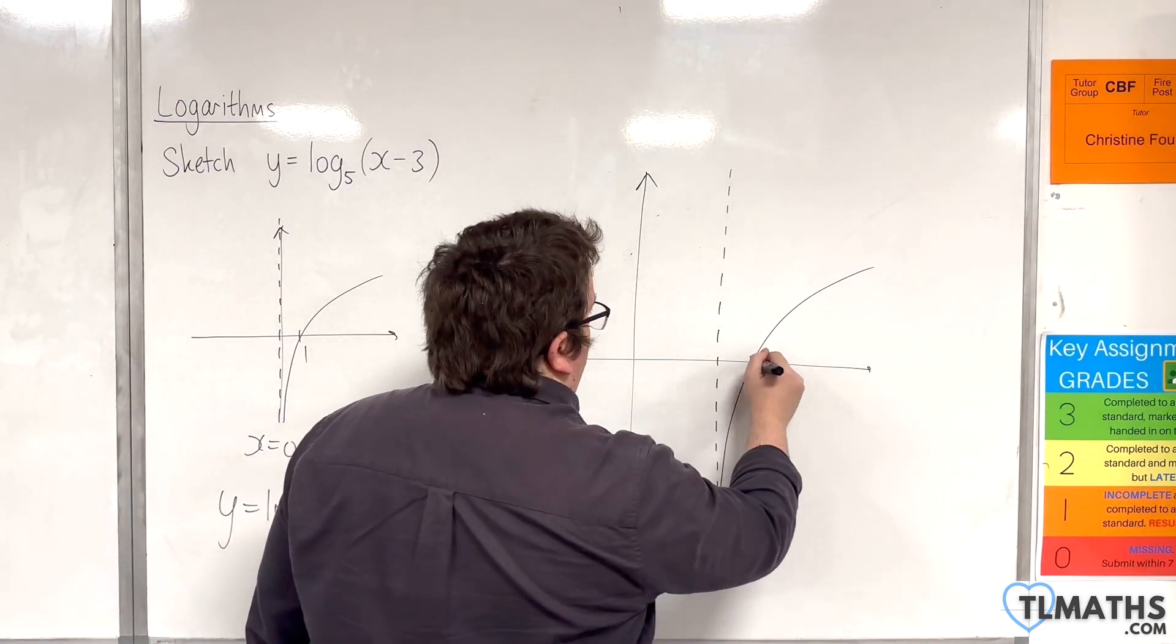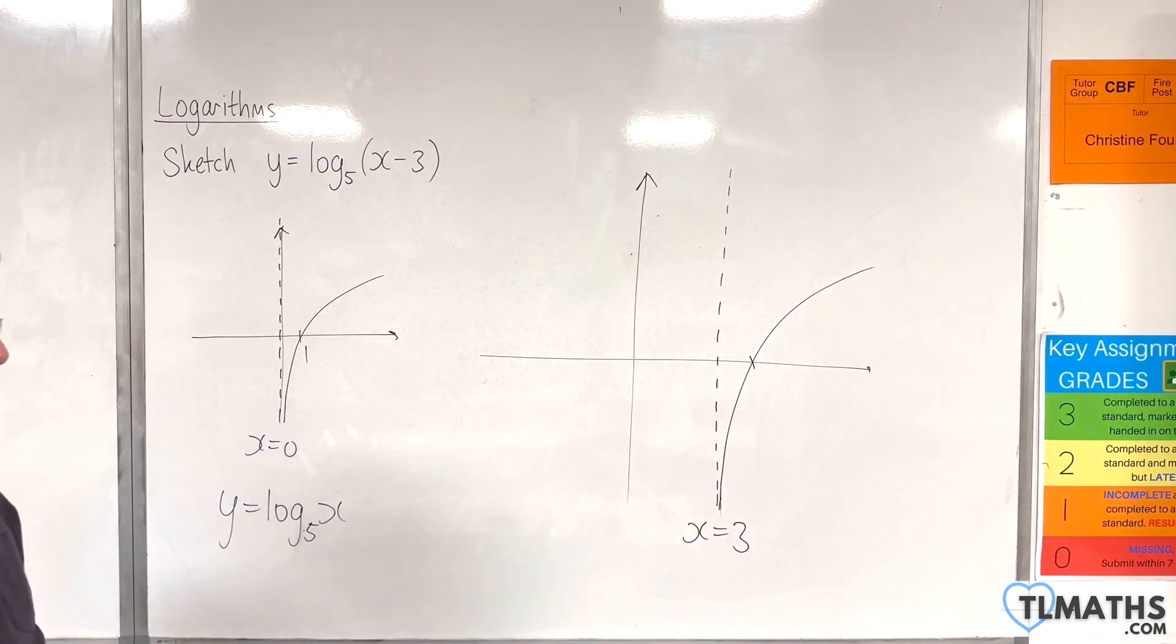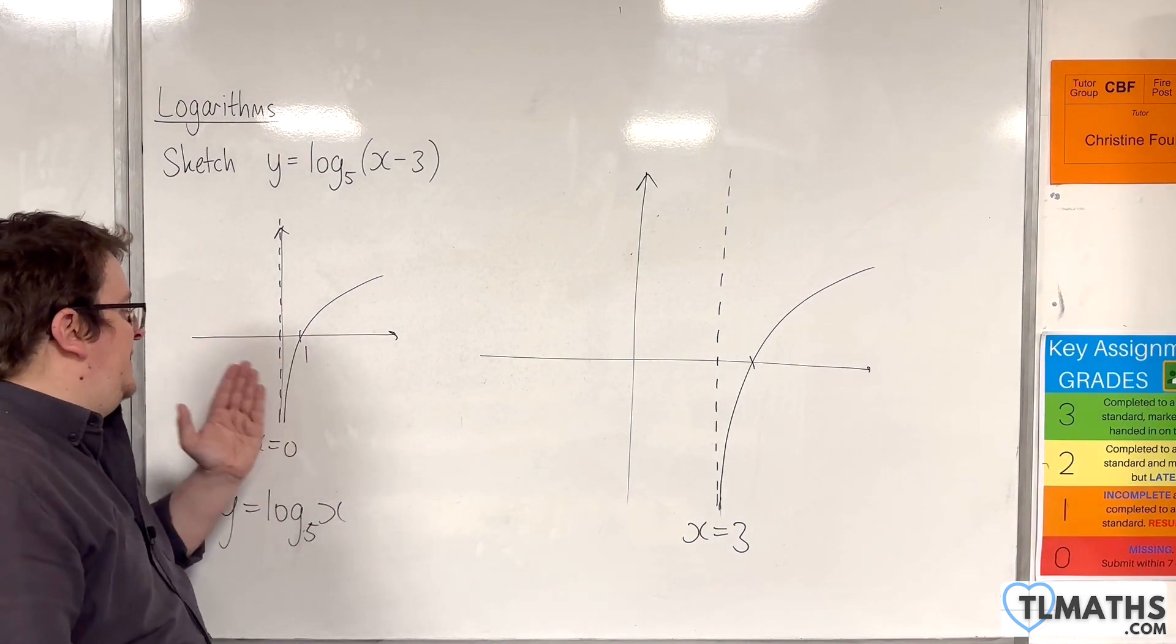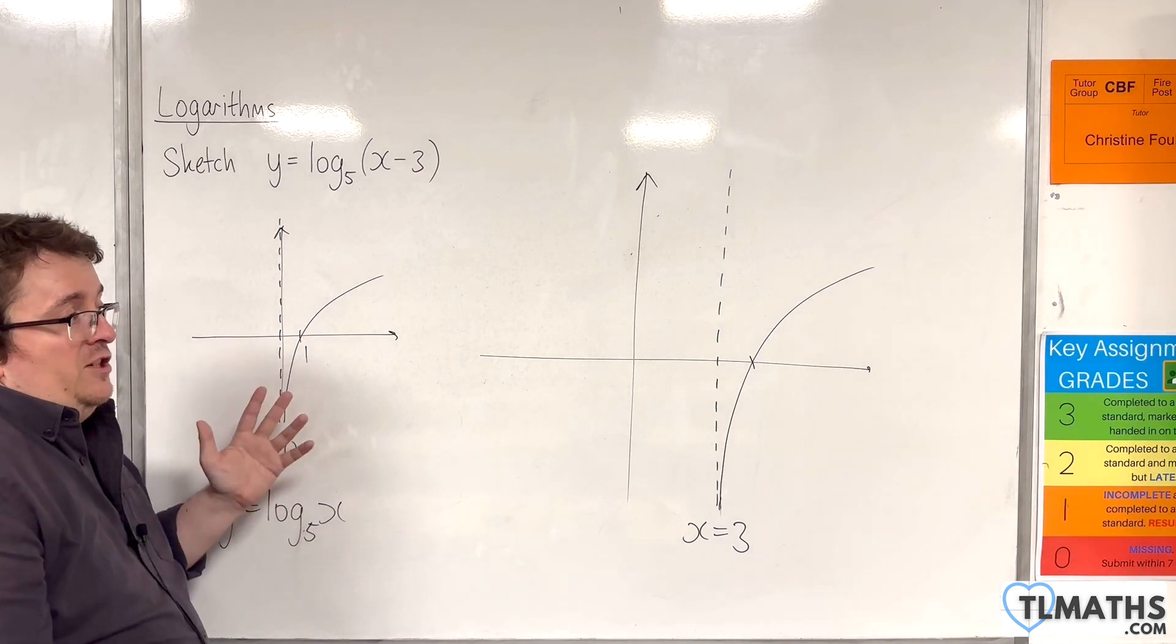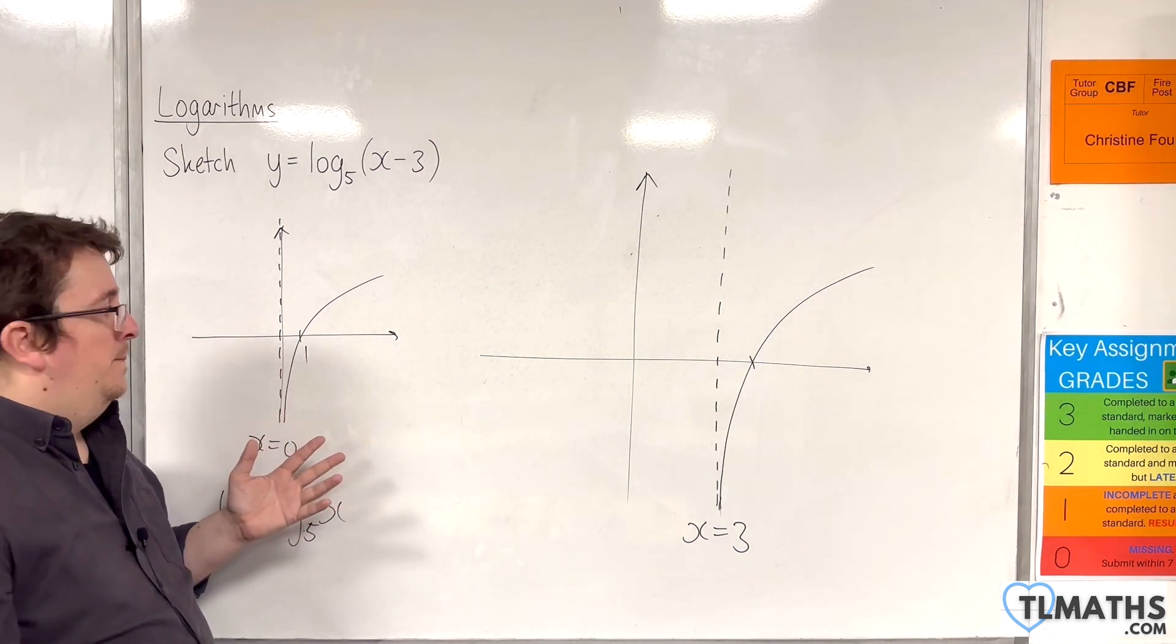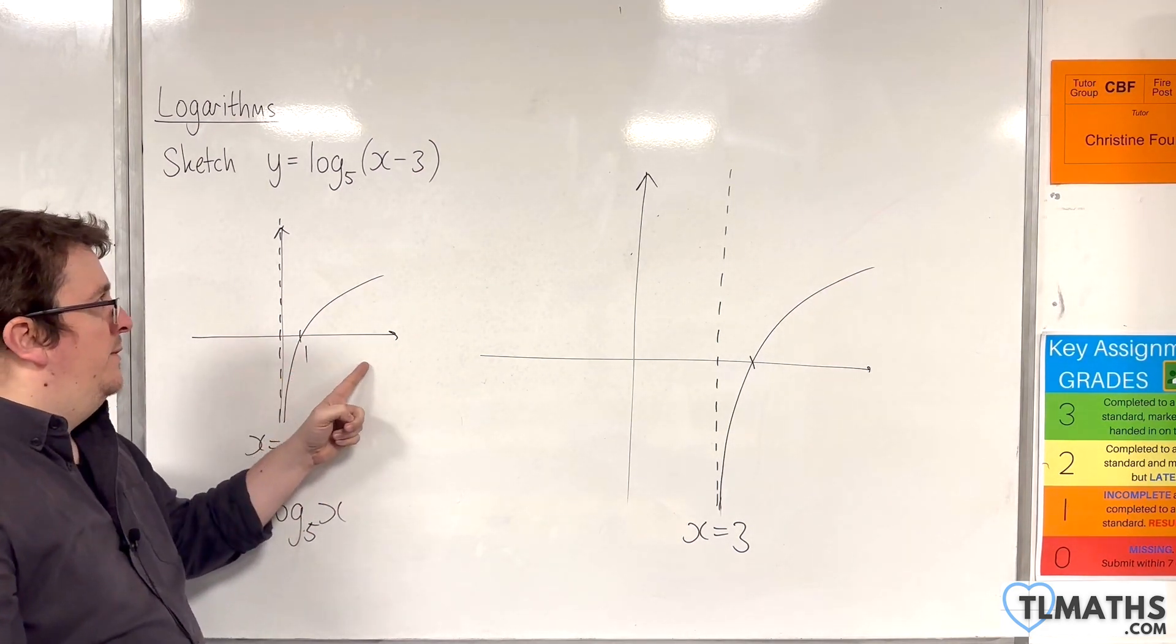And I want to identify where it crosses the x-axis. Now because I'm translating this graph 3 units to the right, you should be able to identify that it has to be crossing the x-axis at 4, because 1 plus 3 will move us to 4.